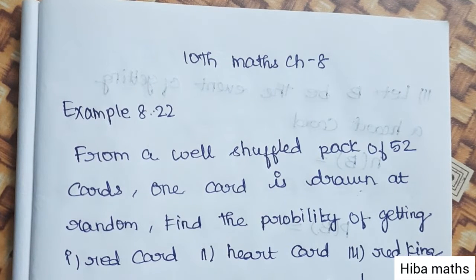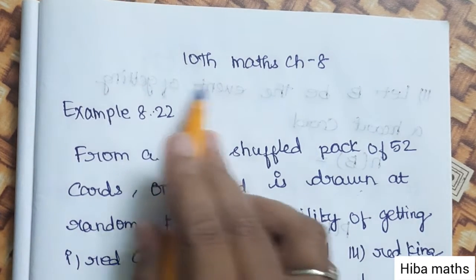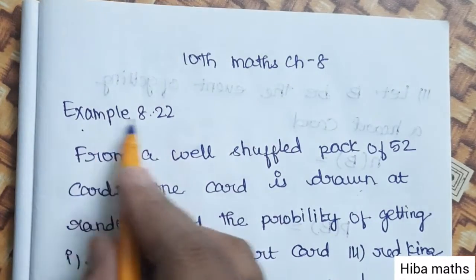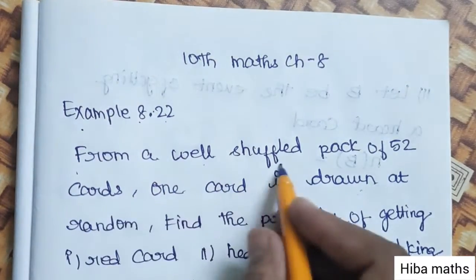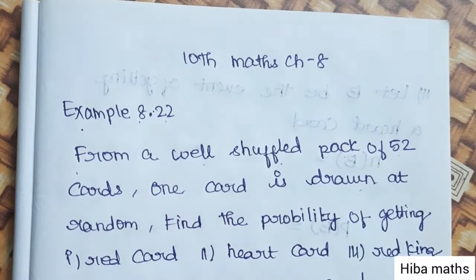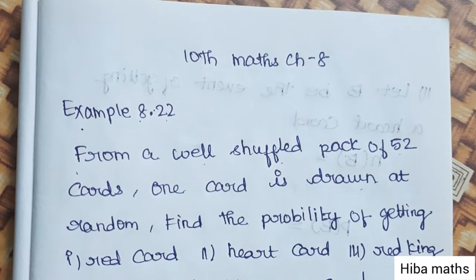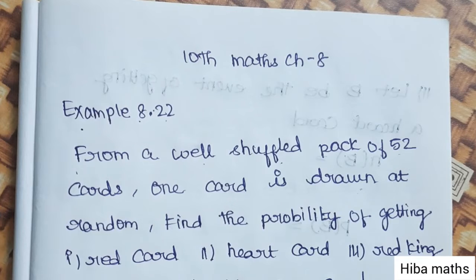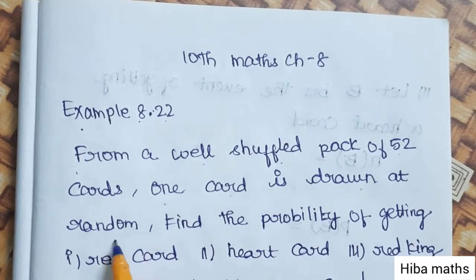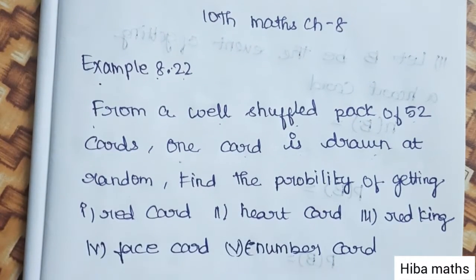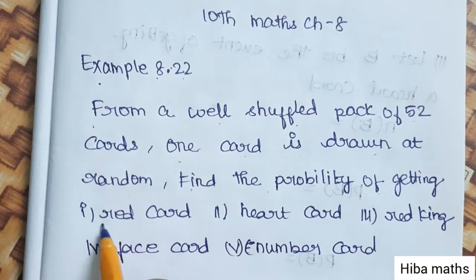Hello students, welcome to Heba Max, 10th Standard Max, Chapter 8. Example 8.22: From a well-shuffled pack of 52 cards, one card is drawn at random. Find the probability of getting the following.